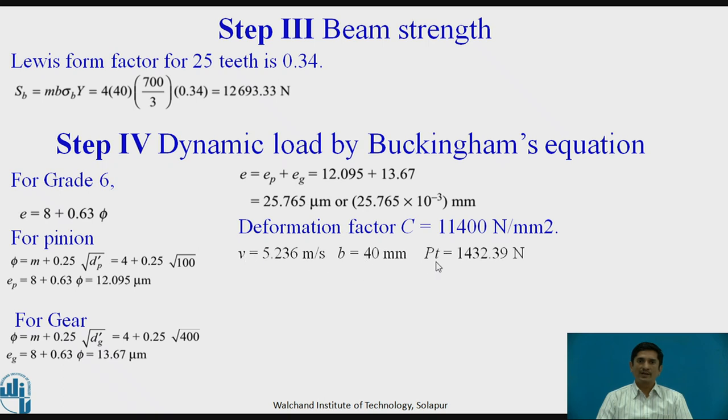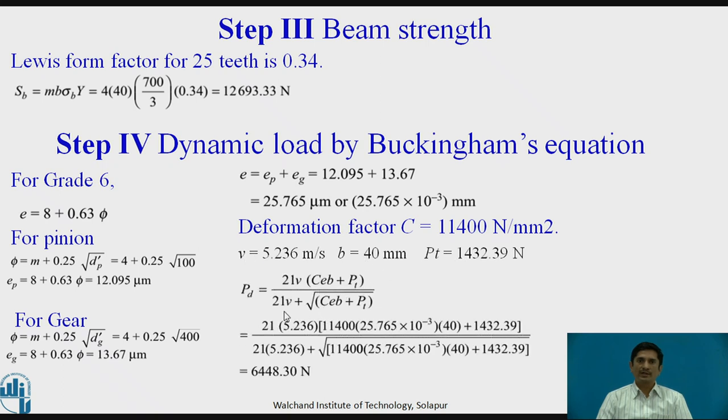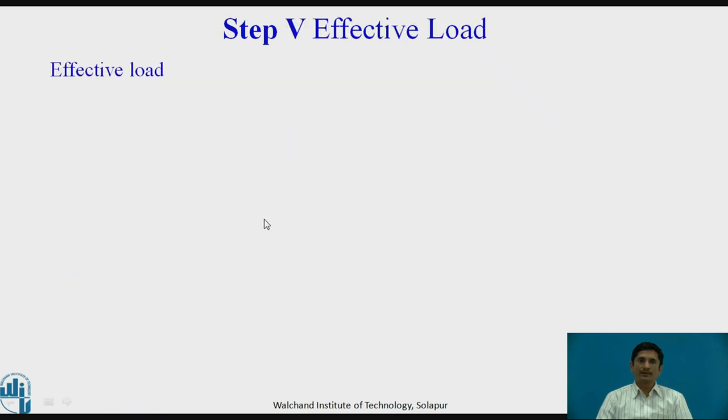Deformation factor C equals 11400 Newton per mm square. Knowing these values, we can calculate dynamic load using Buckingham's equation as 6448.30. The effective load is given as P effective equals ESPT plus PD. If we use this equation, P effective equals 8596.89.